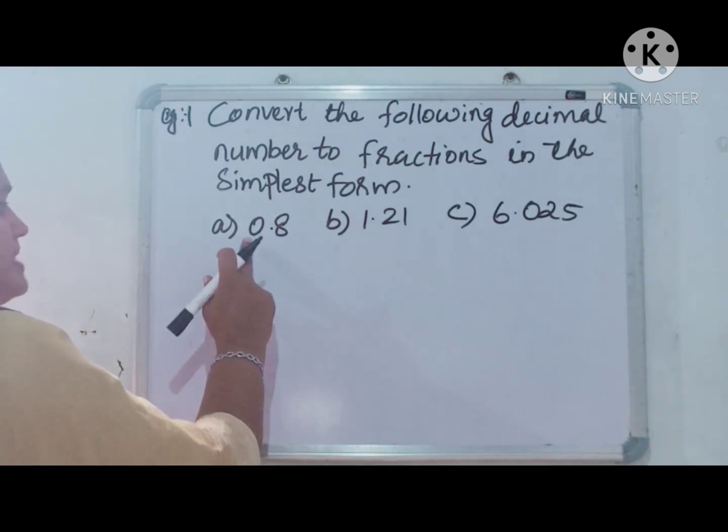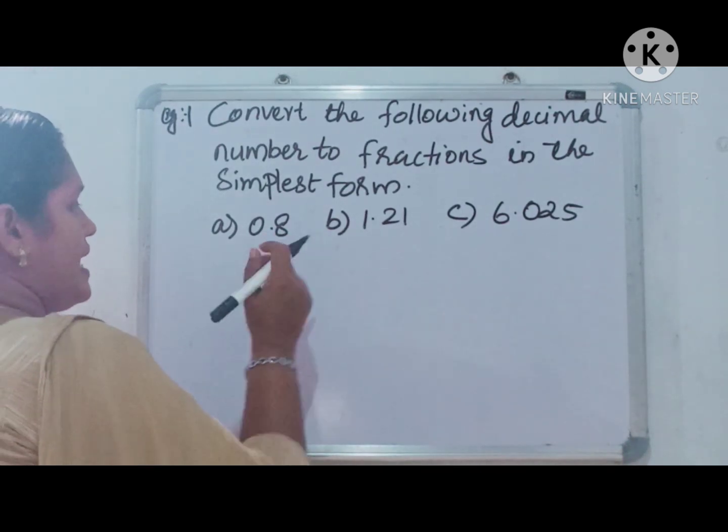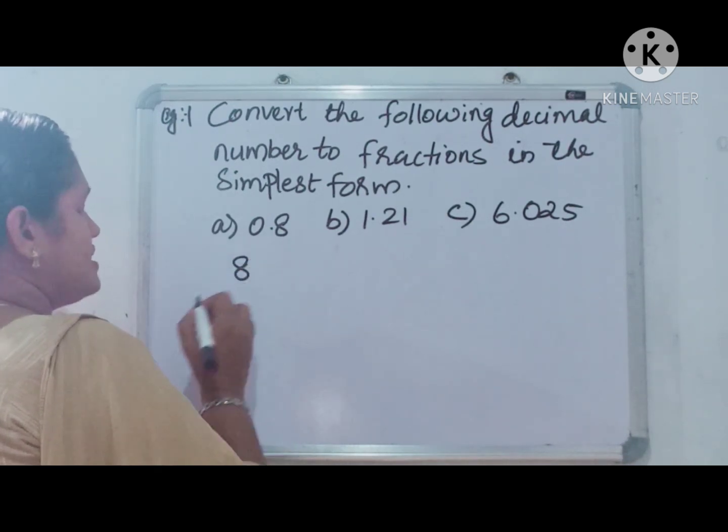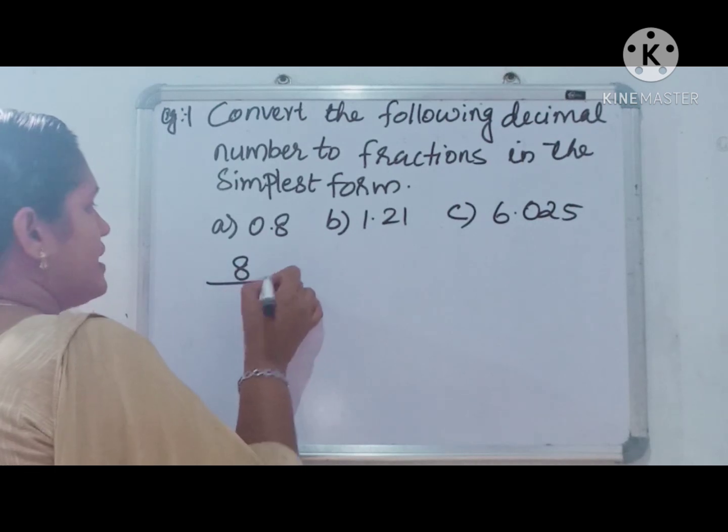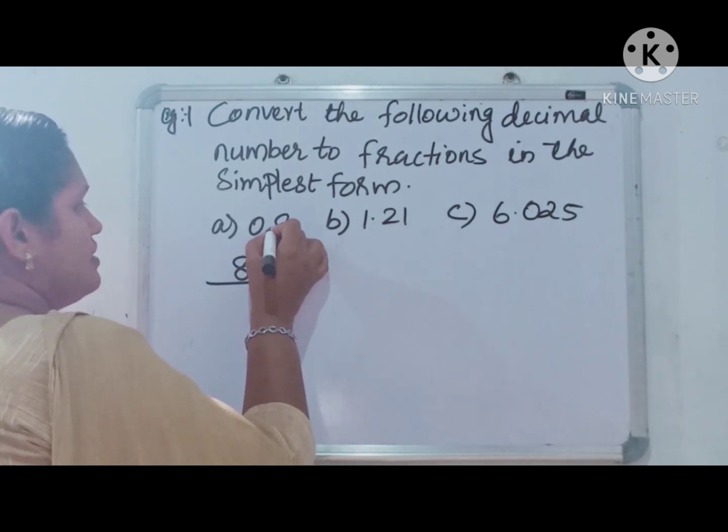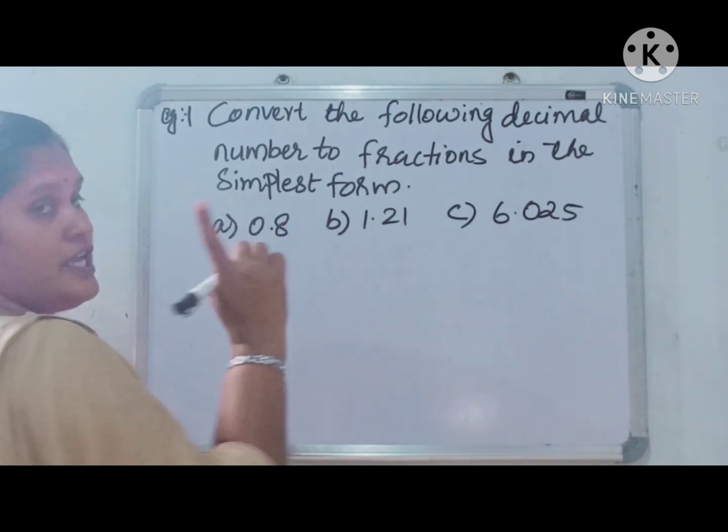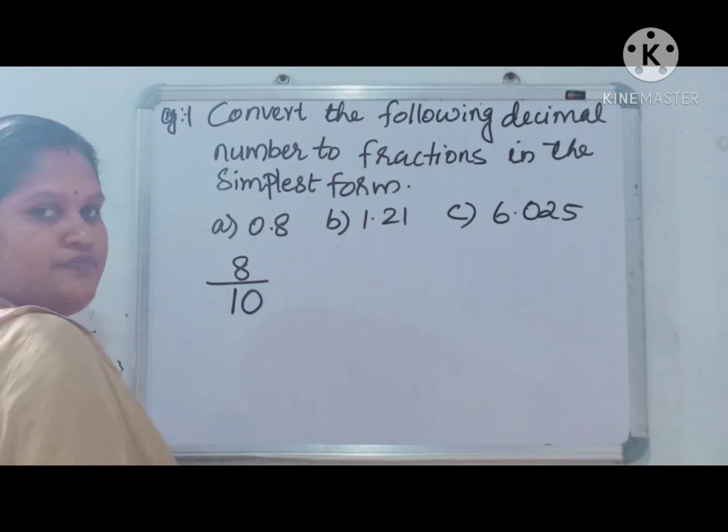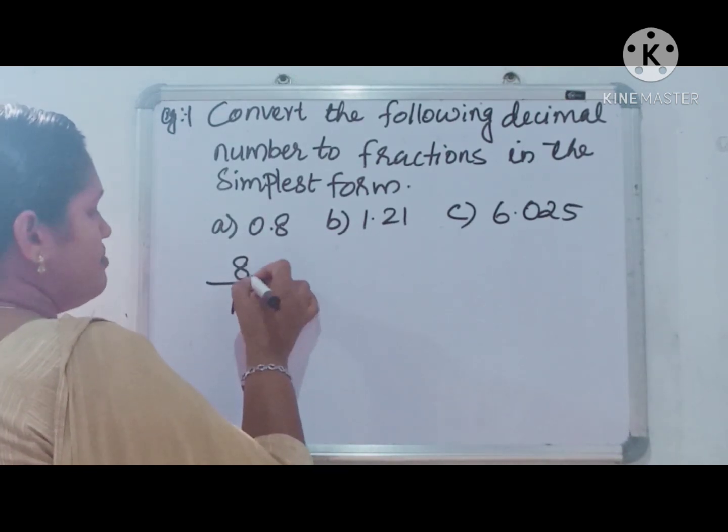First one is 0.8. We can write 8 as the numerator and how many places are here after the decimal point? 1 place. So 10. 8 by 10.